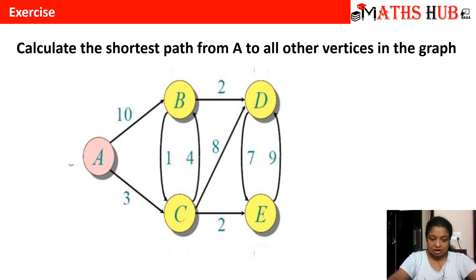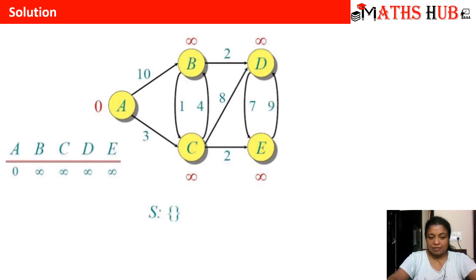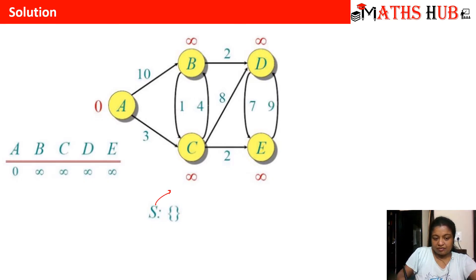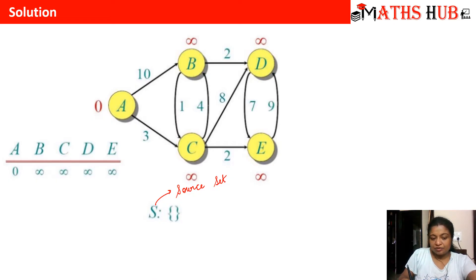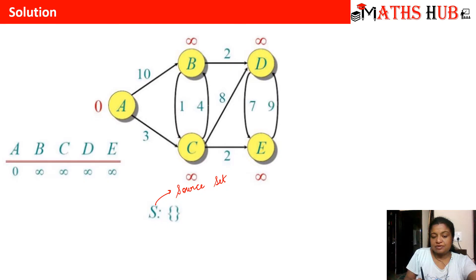How do we start with this algorithm? In step number one, we will write the source vertex and the source set, in which we will put all the vertices one by one. We will identify the distances from that vertex to every other vertex in our graph. In step number one, I have marked the source set with S. This source set will contain the vertices one by one as we select them, and it will tell us the path from the source vertex to the last vertex covered in the graph.